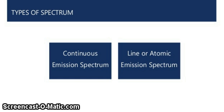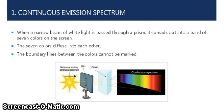Types of spectra: one is continuous emission spectrum, and the second is line or atomic emission spectrum. Continuous emission spectrum: when a narrow beam of white light is passed through a prism, it spreads out into a band of seven colors on the screen. The seven colors diffuse into each other, and the boundary lines between the colors cannot be marked.